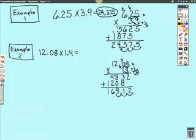1, 2, and 3. So that we now know that 12.08 or 12 and 8 thousandths times 1 and 4 hundredths is equal to 16 and 912 ten thousandths. And that would be our answer to our problem.